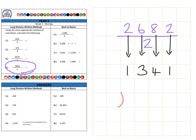But of course, just to check, you could also do it in the standard formal method. So 2,682 and we're going to divide that by two. So how many twos fit into two? Well that's one, nothing left over. How many twos fit into six? That's three. How many twos fit into eight? Well that's four.